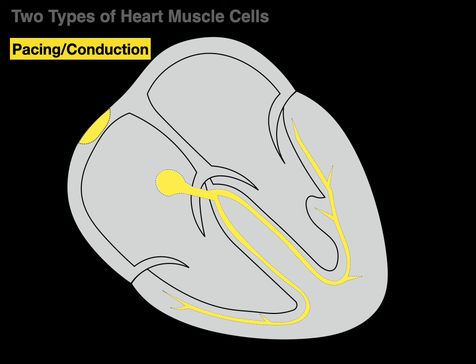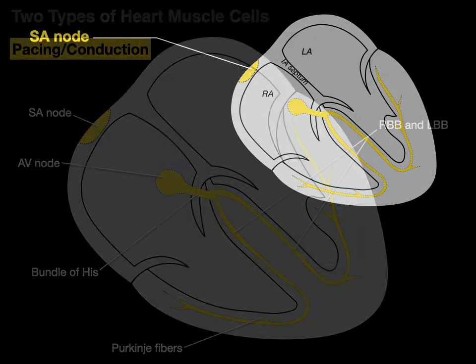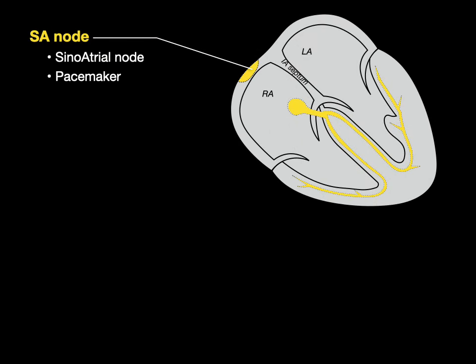Next we have the pacing and conducting cells like the SA and AV node, bundle of His, bundle branches, and the Purkinje fibers. The SA node, or sinoatrial node, is the pacemaker. When it's pacing the heart, it's known as the sinus rhythm. It has automaticity, which means these cells generate an action potential spontaneously, and the typical pacing of the SA node is 60 to 100 beats per minute.